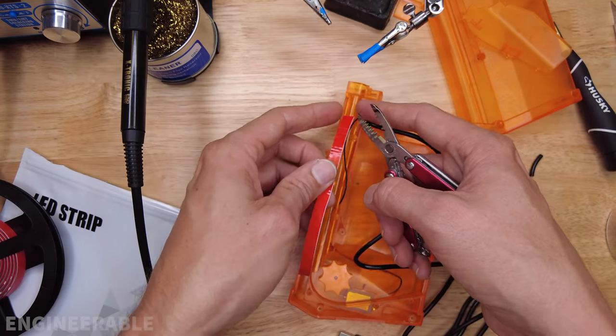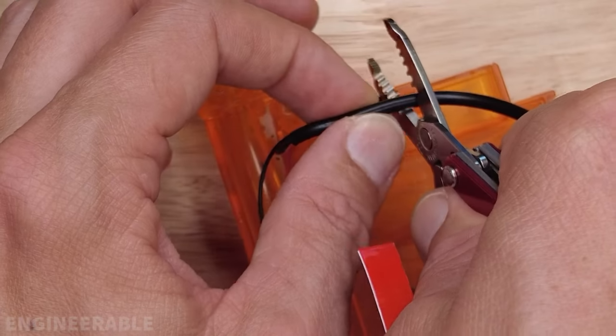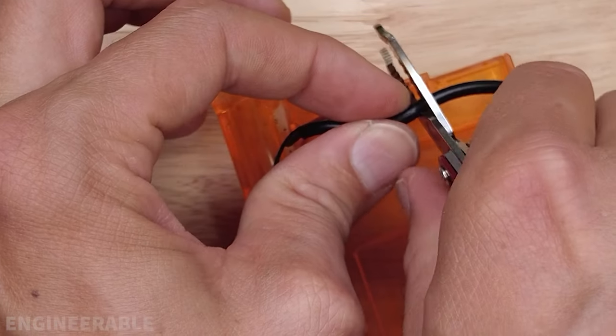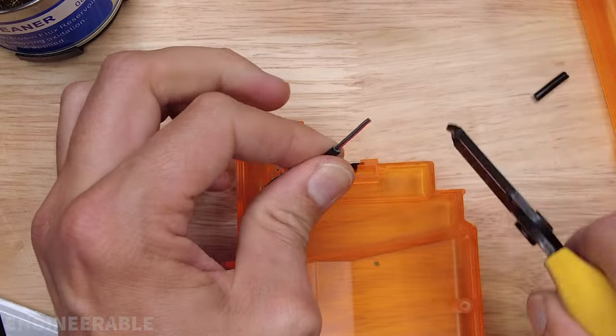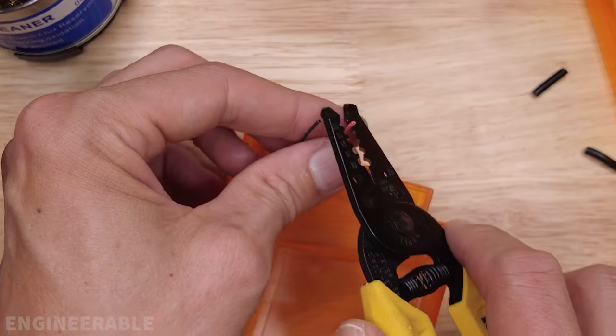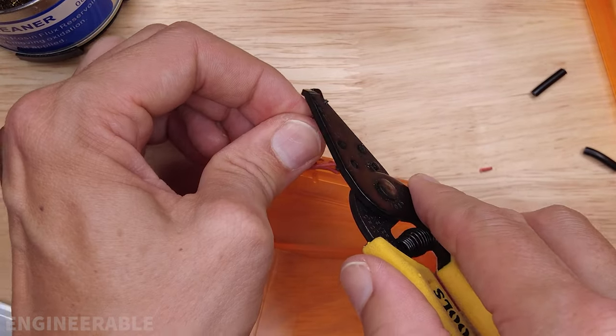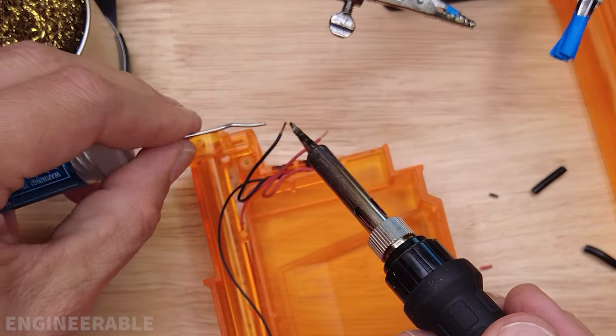I'm going to do the wiring connection up here, so cut this pretty short like this. We don't need that, it just takes up a lot of space. Strip these ends and put some solder on these wires.